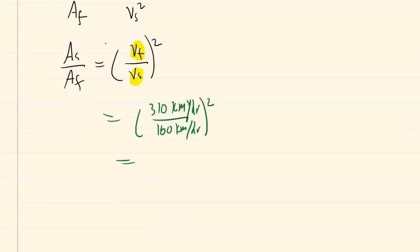The kilometers per hour unit cancels out. So you'll just do 310 divided by 160 and then that result squared, and you end up with 3.75 as the ratio of the area of the slower speed to the area at the faster speed. This is the correct answer to the question.